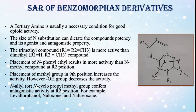SAR of benzamorphan derivatives. A tertiary amine is usually a necessary condition for good opioid activity. The size of N-substitution can dictate the compound's potency and its agonist and antagonistic property. The trimethyl compound, where R1 equals R2 equals CH3, is more active than the dimethyl compound, where R1 is hydrogen and R2 is CH3. Placement of N-phenylethyl results in more activity than the N-methyl compound at the R2 position. Placement of a methyl group in the 9th position increases the activity, however an OH group decreases the activity.